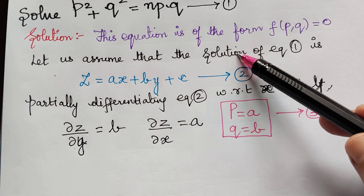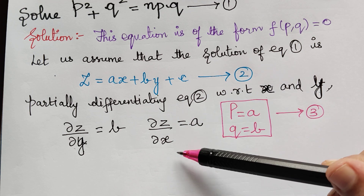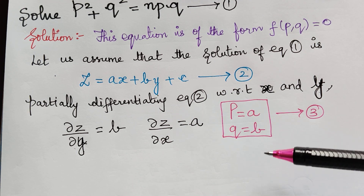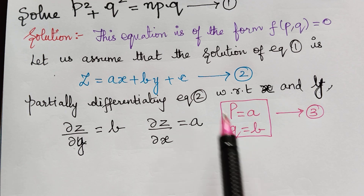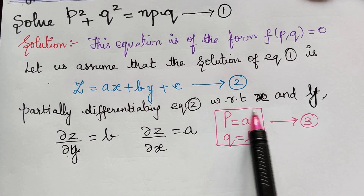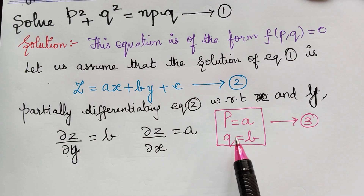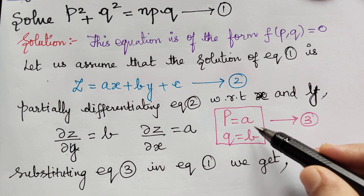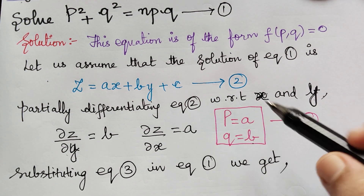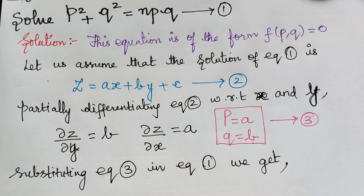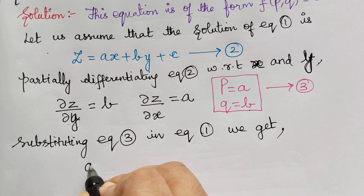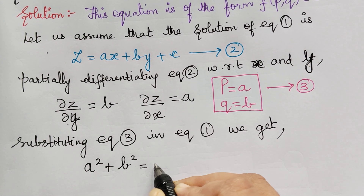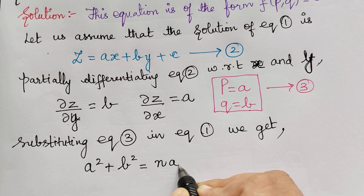Till here all the steps are the same for all the problems. Now we have to substitute p = a and q = b in equation 1 — we mark this substitution as equation 3. Substituting p = a and q = b in equation 1, we get a² + b² = n·ab.